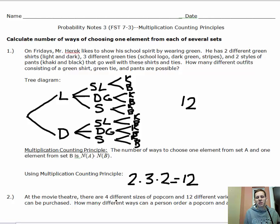On number two, it's the same kind of idea. At a movie theater, if you have four different sizes of popcorn and 12 different varieties of candy that can be purchased, how many different ways can a person order a popcorn and a box of candy? Sure, you could do a tree diagram that starts with four different sizes of popcorn and then it branches, each of these sizes of popcorn branches into 12 varieties of candy, but good grief, that would be a ton of branches. Why not just go, four sets of popcorn, 12 varieties of candy, multiply them together, and get your answer that way. I think that works out a lot nicer.